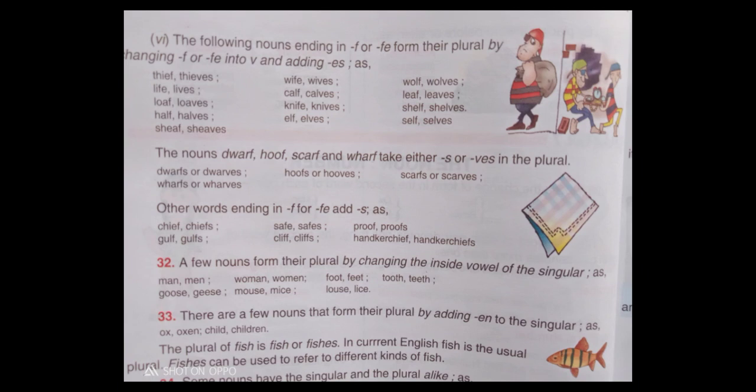The following nouns ending in F or FE form the plural by changing F or FE into V and adding ES, as: thief, thieves; life, lives; loaf, loaves; half, halves; sheaf, sheaves; wife, wives; calf, calves; knife, knives; elf, elves; wolf, wolves; leaf, leaves; shelf, shelves.